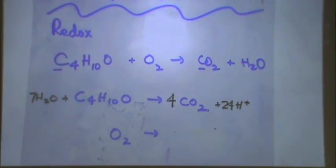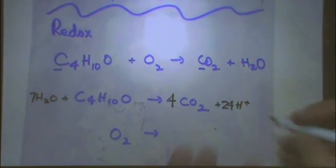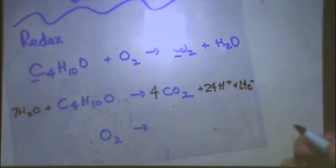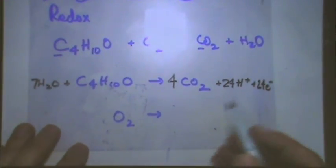Step three is to balance the hydrogens with H plus. That's where the H pluses will come back. So, I'm going to add how many here? Twenty-four. Step four, balance the charge with electrons. We'll add electrons on the right, with H pluses, how many? Twenty-four.